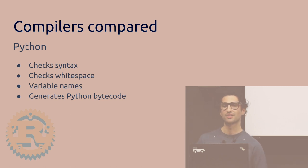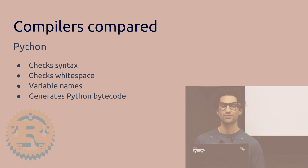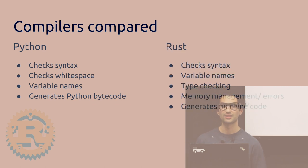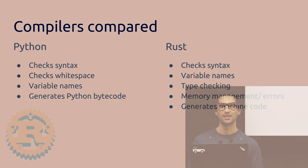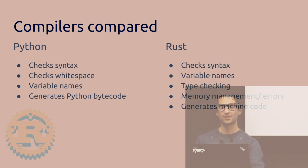Comparing the Python compiler versus Rust: in Python, at compile time it checks for syntax, whitespace, and variable names, then generates Python bytecode. In Rust, you check syntax, variable names, and also do type checking — if you say it's an integer, it has to be an integer. It also checks memory management, whether variables go out of scope or not, and then generates machine code.